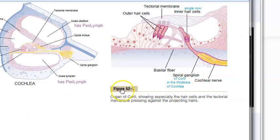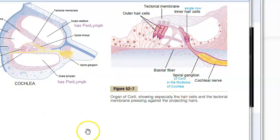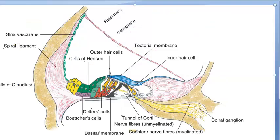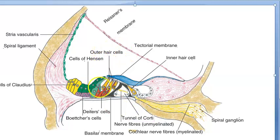Let's look at the components of the Organ of Corti. This same structure is shown in more detail here. The first component is the tunnel of Corti, marked here. The tunnel of Corti has inner and outer rods and contains something called cortilymph. The exact function of the tunnel of Corti is not fully known. The second component is the outer hair cells.